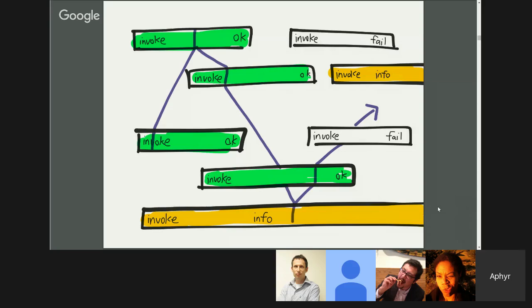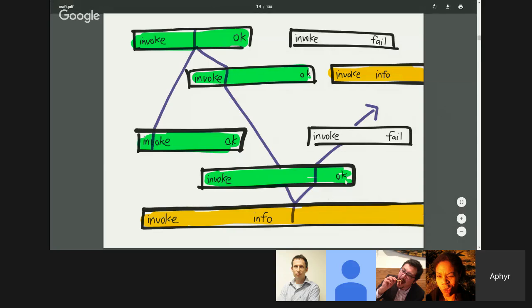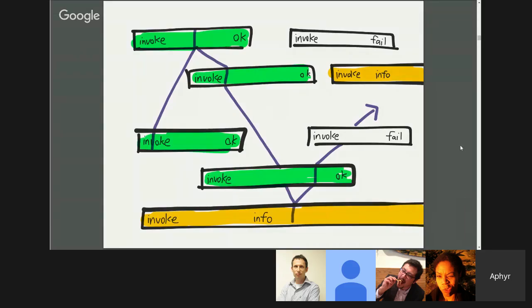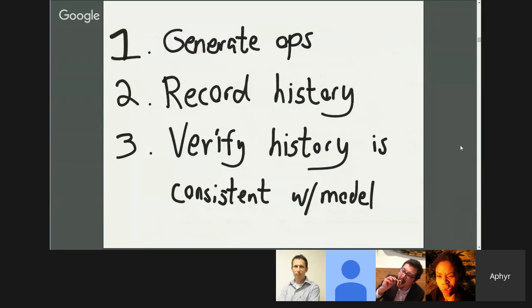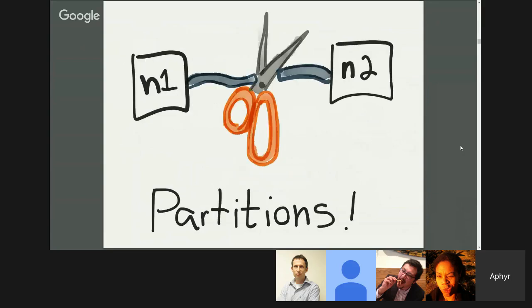So over time, we're going to build up a concurrent history. And then over this concurrent history of operations, we're going to try and figure out if it made sense. The general scheme is to generate randomized operations for whatever your system does. We're going to record a history of those operations and what happened to them. And we'll verify that history matches some model of the system, some abstract definition. And while this is going on, we're going to get out our really big pruning shears and start cutting up the network and see what happens.